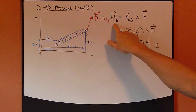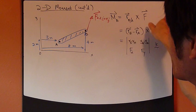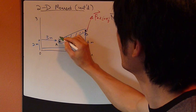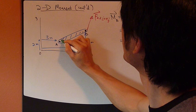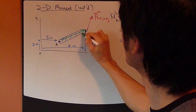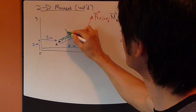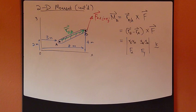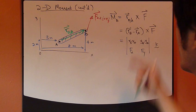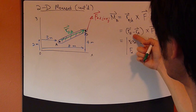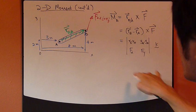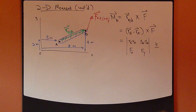So the definition is the same, R cross F, except R here becomes R_B relative to A, going from A to B. So this is R_B/A. The definition is R_B minus R_A cross with F.